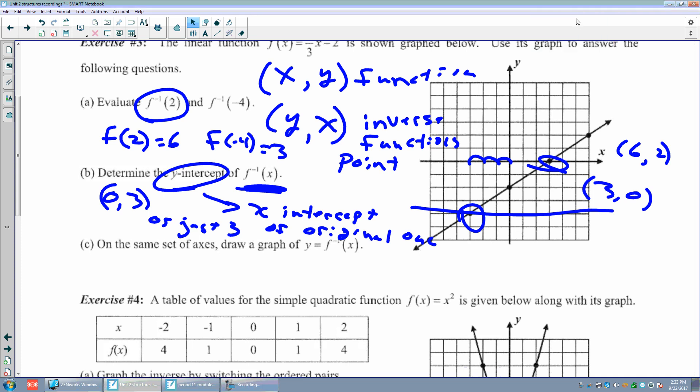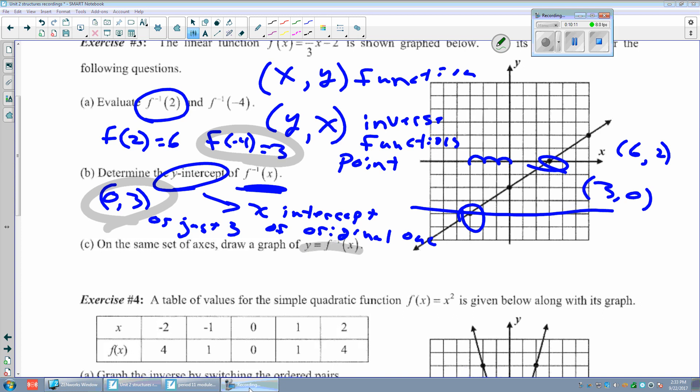On the same set of axes, draw the graph of y = f inverse of x. How can I do that? Well, I have a point and another point - connect them and that makes a line. Two points determine a line. I plotted two points: (0, 3) and (-4, -3). Let's check the other point we have: (2, 6). And how about that, they do make a line! Graph it and label it f inverse of x.